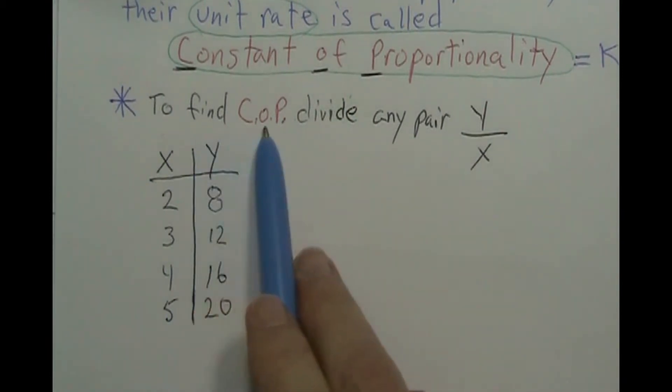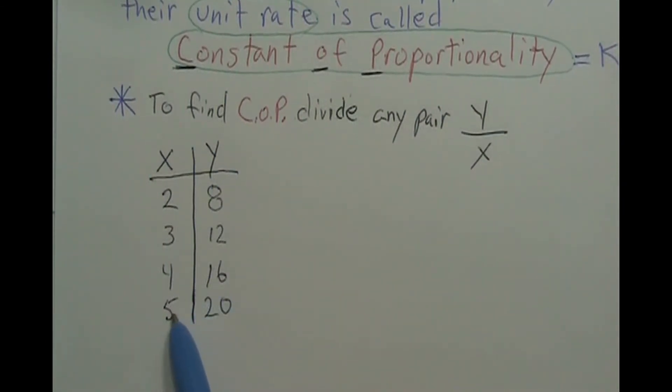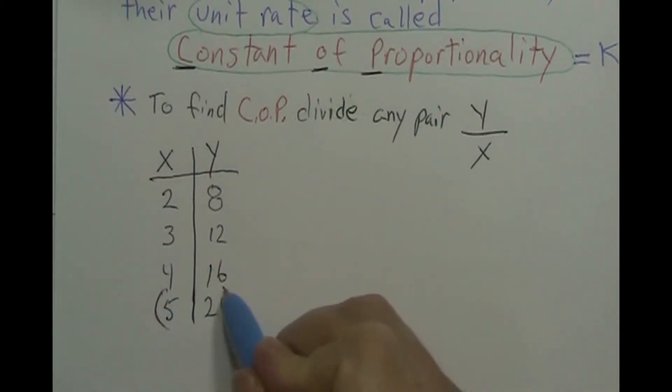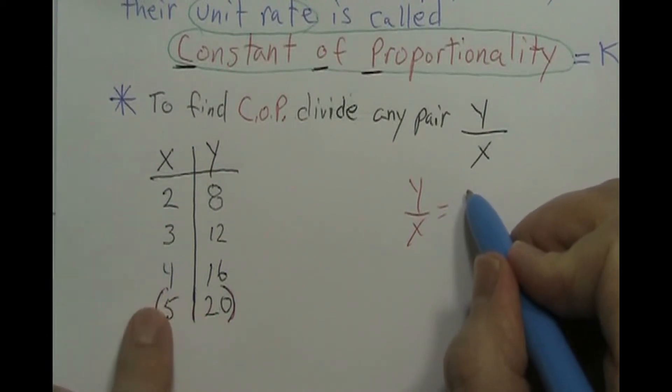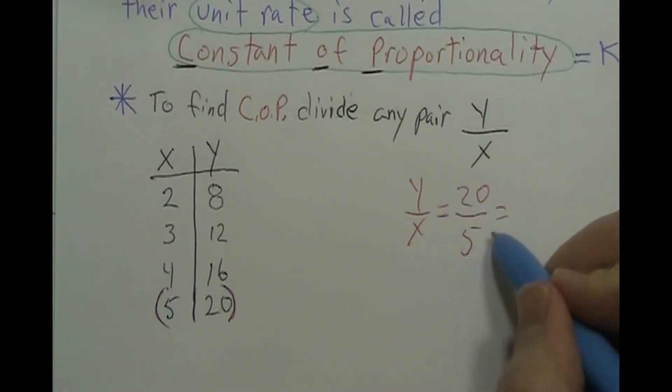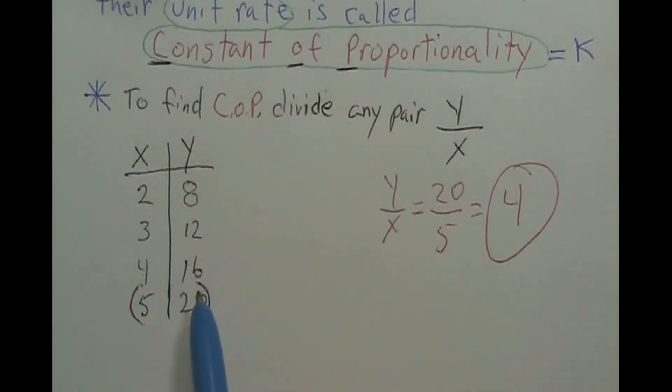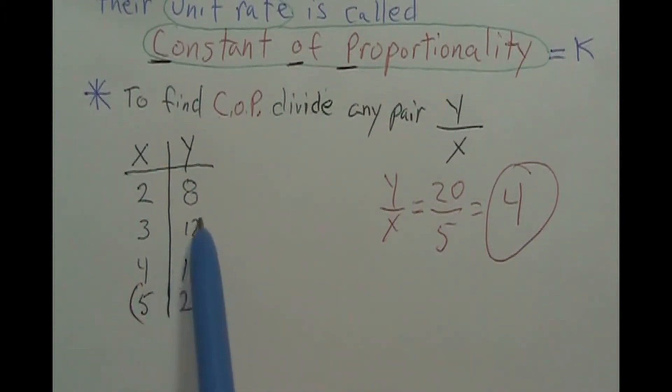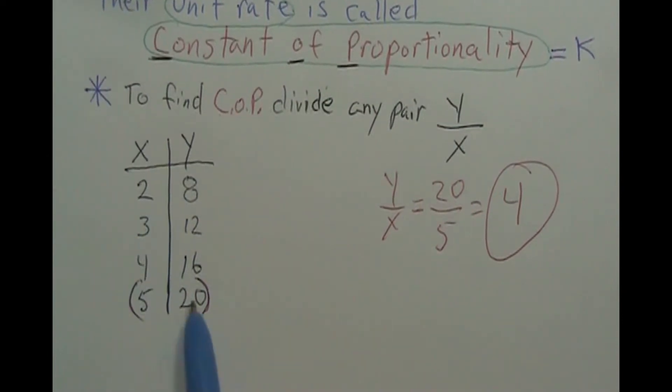Okay, so we said to find constant proportionality, COP, divide any pair of y over x. So I can take any y divided by any pair, y over x, any one of these. I'm just going to use this bottom one right here because we'll use the other ones later. So if I take y over x and I'm using this pair right here, that makes it 20 over 5. 20 divided by 5 is just 4. 4 would be our constant of proportionality, also known as unit rate, except we don't have any units of measurement. And notice that if I take any one of these, I would still get 4. 12 divided by 3, 4. 8 divided by 2, 4. See that any one of these would work.